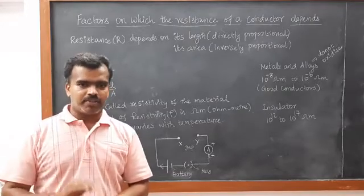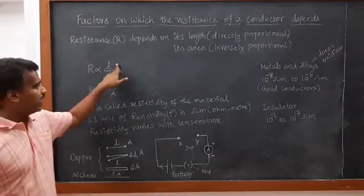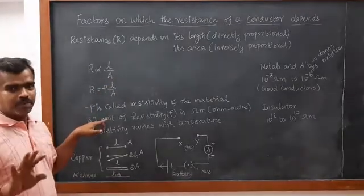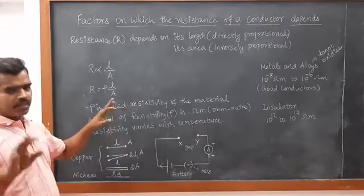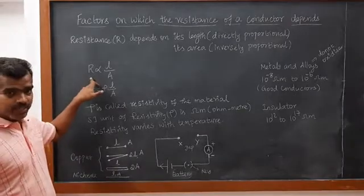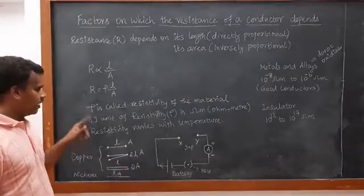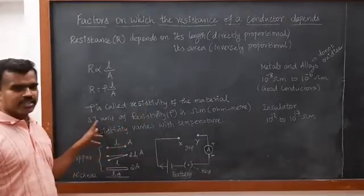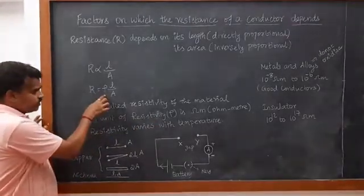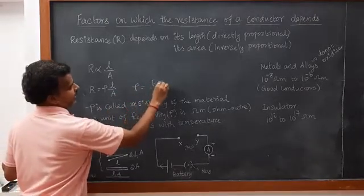Resistivity depends upon temperature and the nature of the material. R depends upon length, area, temperature, and nature of the material. The unit of resistivity is ohm-meter. We can write R equals ρ times A divided by L, so resistivity ρ equals R times L divided by A, giving units of ohm-meter.